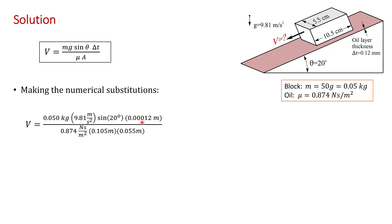That's the thickness of the oil layer, 0.12 millimeters, so 0.00012 meters. Here we have the dynamic viscosity of the oil, 0.874 pascal seconds, and then the surface area of the bottom of the block. The block surface area is 5.5 centimeters by 10.5 centimeters, so 0.105 meters times 0.055 meters.